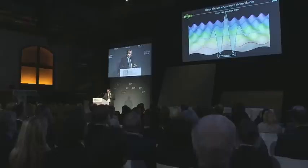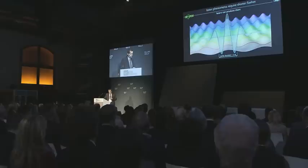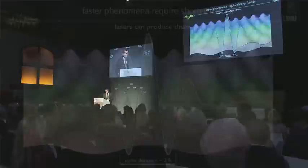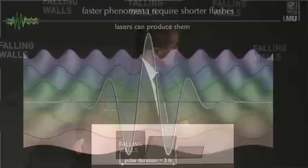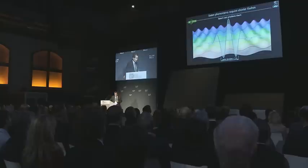If we add all waves of visible light together, we can produce pulses that are as short as just three femtoseconds. However, even these pulses are far too long to capture the fastest electrons that can occur in nature.